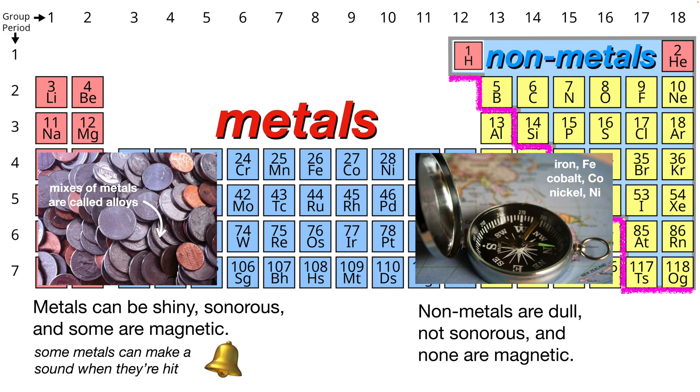These coins, you can see coins can be shiny, and almost all coins are mixes of metals, and a mix of different metal is called an alloy. It gets some properties from the metals that are added into it, but they're shiny.